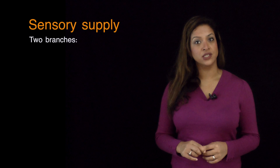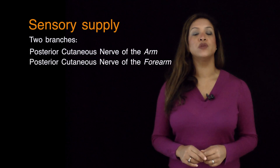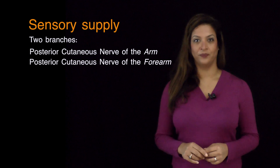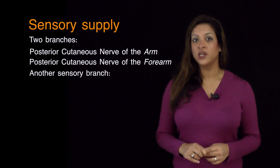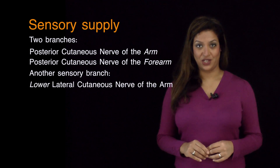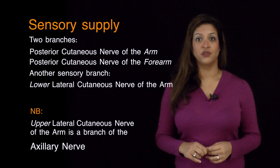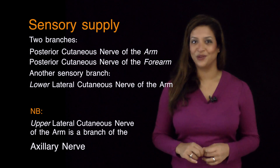The sensory supply of the radial nerve is quite extensive. In the arm it gives off two branches: the posterior cutaneous nerve of the arm and the posterior cutaneous nerve of the forearm. It also gives off the lower lateral cutaneous nerve of the arm. Note that the upper lateral cutaneous nerve of the arm is a branch of the axillary nerve, not the radial nerve.